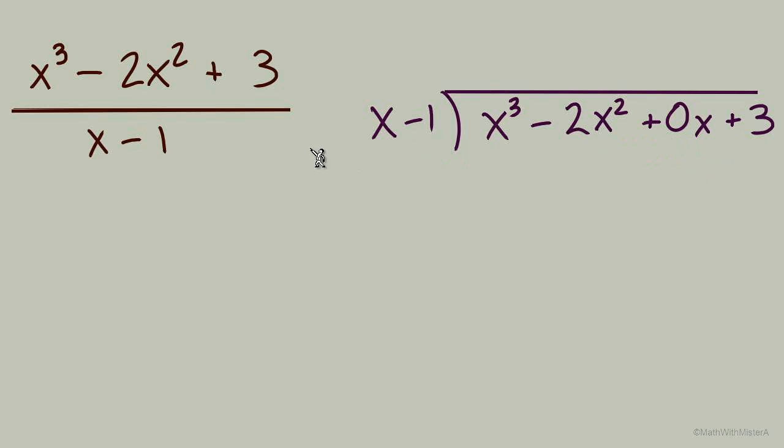That's why I have this 0x. Because our dividend has x to the third, x to the second, it looks like we're missing a term that has x to the first power, and that's why I have the placeholder 0x and then the plus 3. Doing long division requires us to start with this first term in the divisor and divide it out. I like to keep all of my like terms organized in columns, so x squared is right above the negative 2x squared.